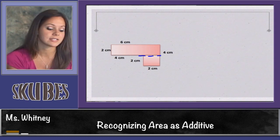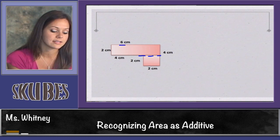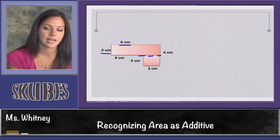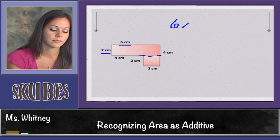Let's look at the top rectangle. If I multiply 6 times 2 and get 12, I know the area of the top rectangle is 12.